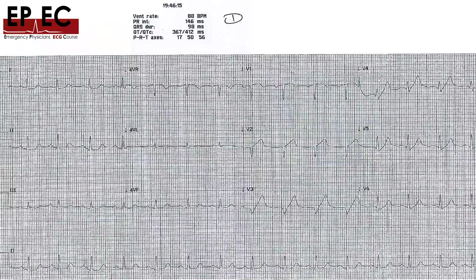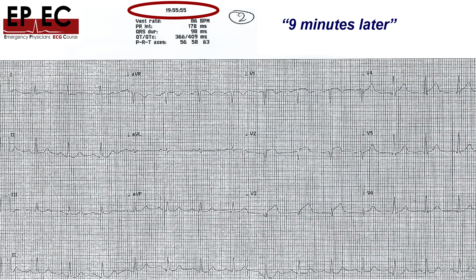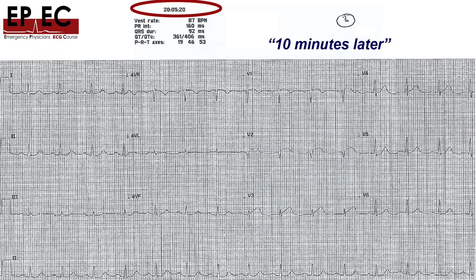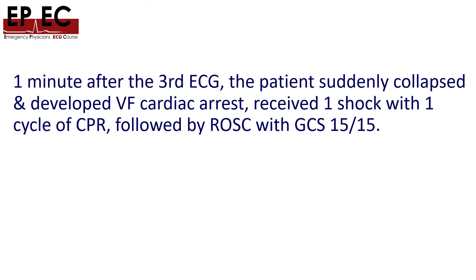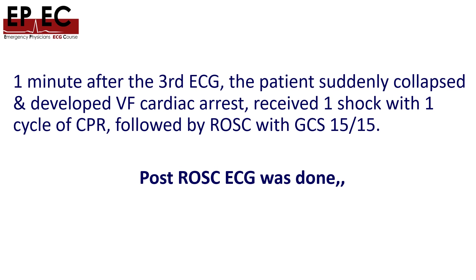For this Poole case, at 19:46 and 15 seconds, the repeat ECG was done nine minutes later and now clearly shows ST elevation in V2 and V3 — a definite STEMI, just nine minutes after the first ECG. A third ECG done 10 minutes after that showed no significant difference. Then, one minute after the third ECG — sudden collapse, ventricular fibrillation, cardiac arrest. The patient received one shock and one cycle of CPR, achieved ROSC with GCS 15/15, received pain medications, and had a post-ROSC ECG performed.